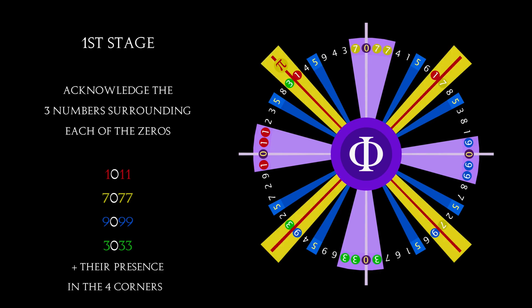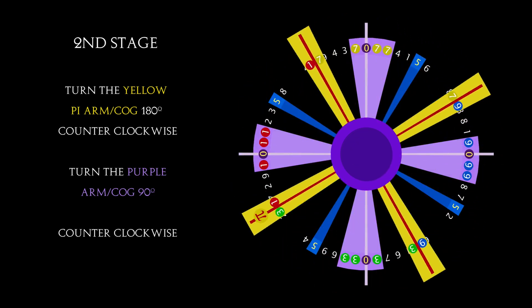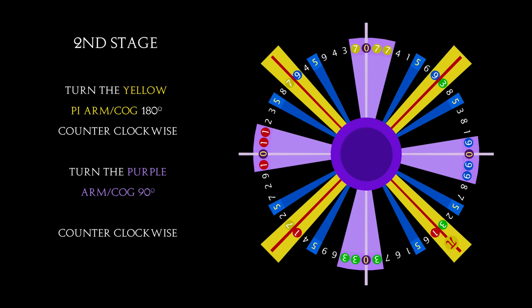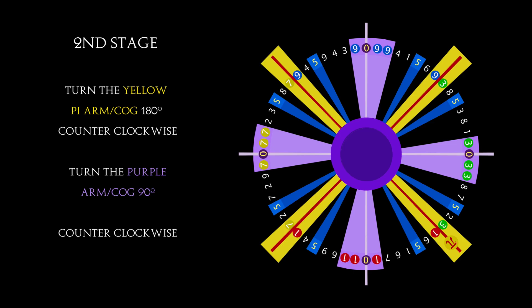Turn the yellow pi arm 180 degrees, and the purple arm of the zeros 90 degrees, both counter-clockwise.